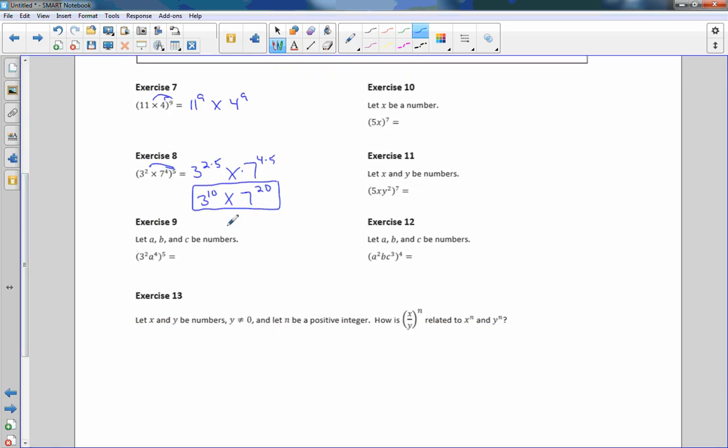Okay, exercise 9. Let A, B, and C be numbers. 3 squared, A to the 4th to the 5th. So we're going to keep our base. We're going to distribute the power. So it's going to be 3 to the 2 times 5, and then A to the power of 4 times 5. When simplified, this is going to become 3 to the 10th, A to the 20th.